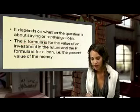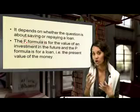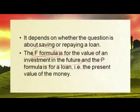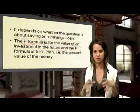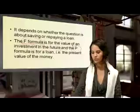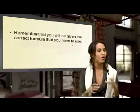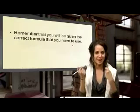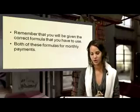The F formula is the value for an investment in the future — think 'investment in the future.' Whereas the P formula is the formula for a loan, so it is more present — it's what you're trying to save up right now, not investing for later. Remember that you will be given the correct formulas in the test; you need to know which formula to use and how to use your question correctly.